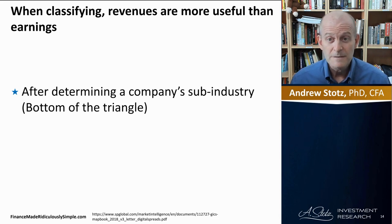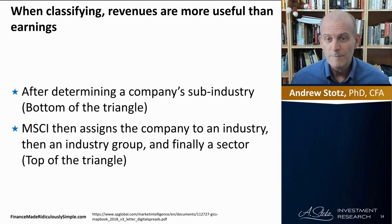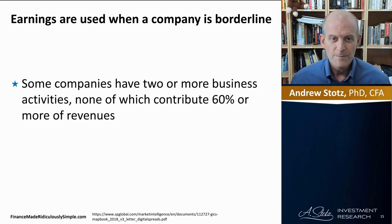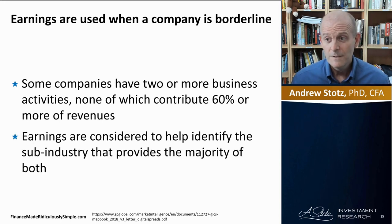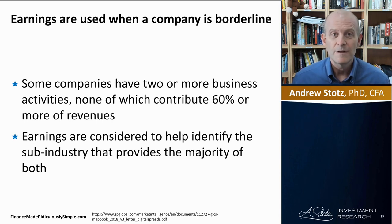After determining a company's sub-industry at the bottom of the triangle, MSCI then assigns the company to an industry, then an industry group, and finally a sector at the top. Earnings are used when a company is borderline — meaning it has two or more business activities, none of which contribute 60% or more of revenues. In that case, earnings help identify the sub-industry that provides the majority of both.